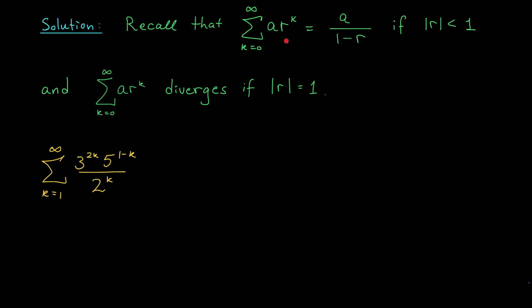if we're trying to sum the terms a r to the k from k equals 0 to infinity, that sum will converge to a over 1 minus r when the absolute value of the common ratio is less than 1, and it will diverge when the absolute value of the ratio is bigger than or equal to 1.